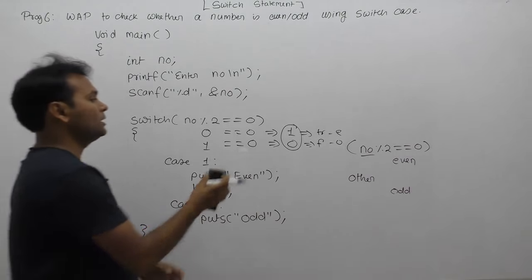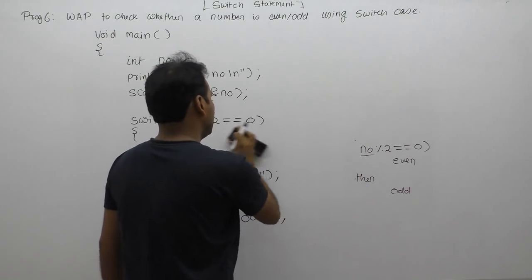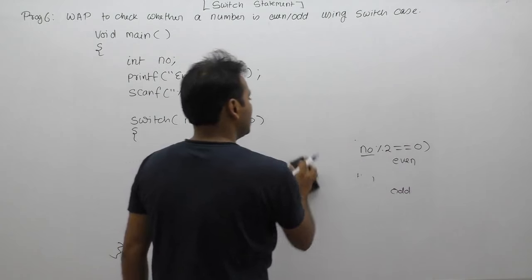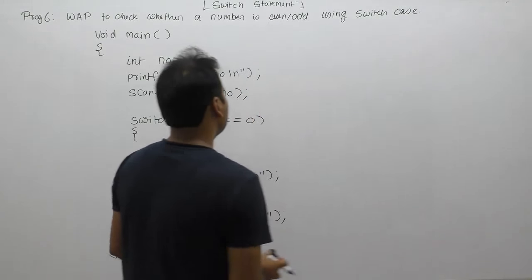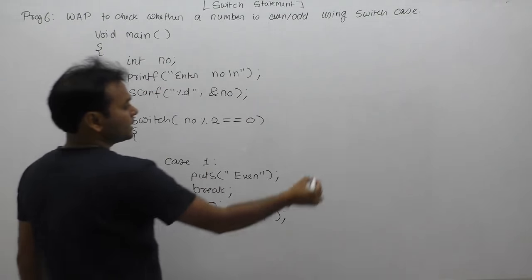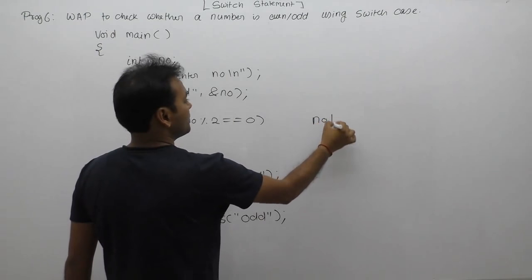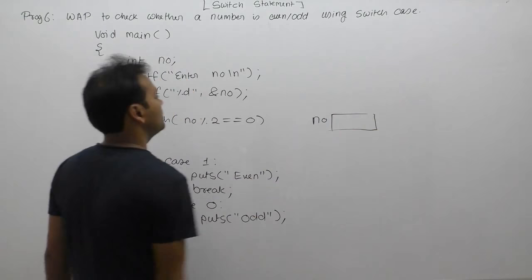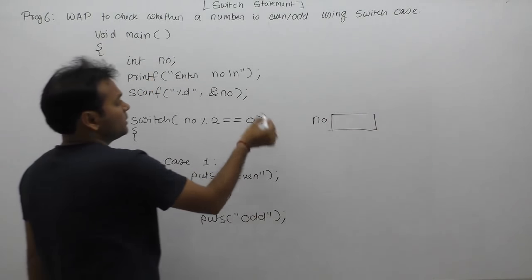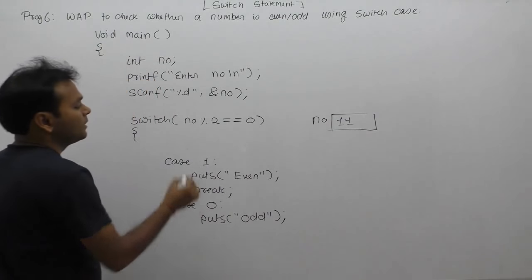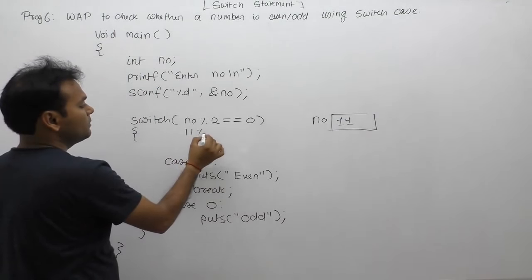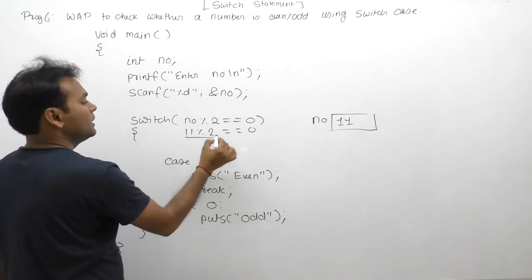This is the logic for checking whether a given number is even or odd using switch statements. Now suppose the program execution starts. We perform variable declarations, then enter a value - let's say 11. When we divide 11 by 2, the remainder